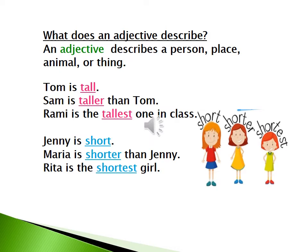Rita is the shortest girl. Where is the adjective? Shortest. What did we add to the word short? EST. So, shortest is a superlative adjective. It compares three persons.